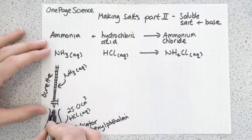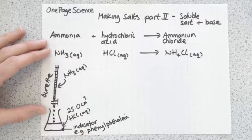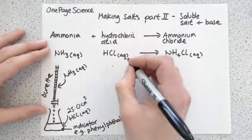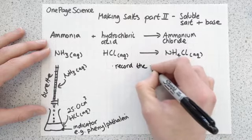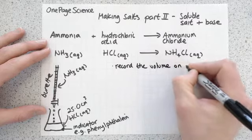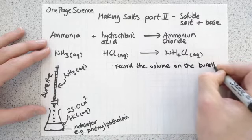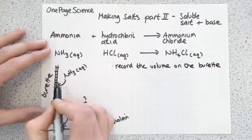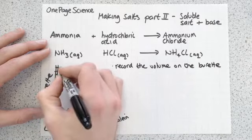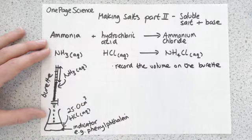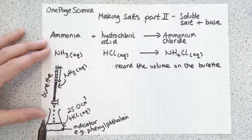You then drip in your ammonia from the burette into the solution, keeping swirling it, until you reach the point where it's neutralized. You record the volume before and after on the burette, so you know exactly how much ammonia was added to the flask.